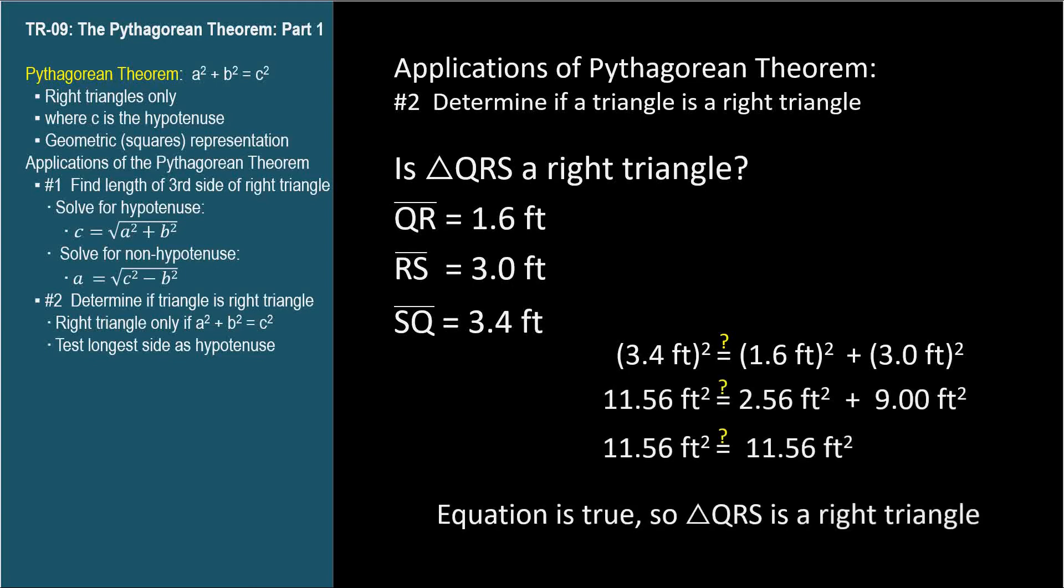So we simply see if 3.4 feet squared equals the sum of the other side squared. In this case, it does, so the Pythagorean theorem is true. So yes, triangle QRS is a right triangle.